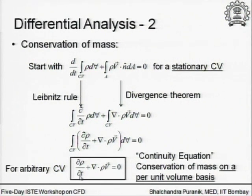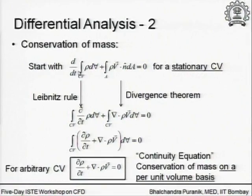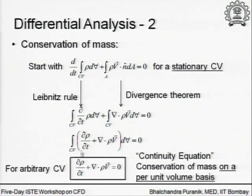Therefore we say that the partial derivative of rho with respect to time plus del dot of rho v equal to zero must be satisfied, and this is what is popularly called the conservation of mass on a differential basis. Fundamentally, the physics cannot be lost. The physics is the same. What we did was some mathematical manipulations to cast an integral form into this. The integral form was telling us the rate of accumulation term and a net rate of outflow of mass term from the control volume.